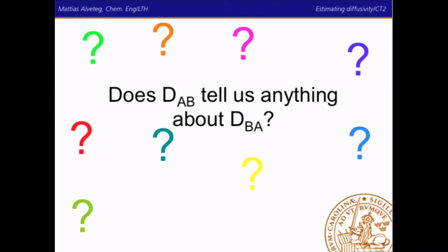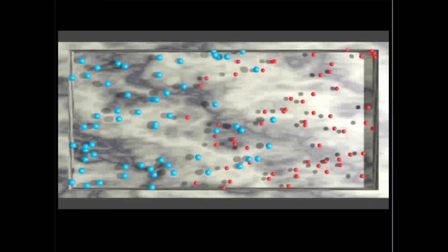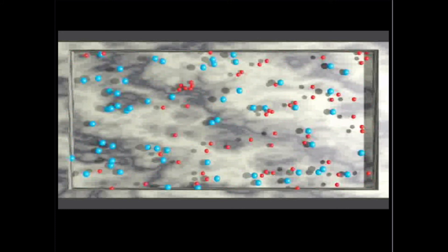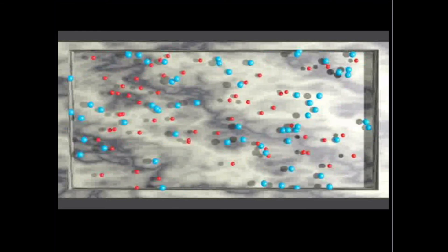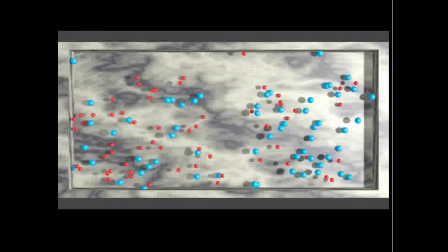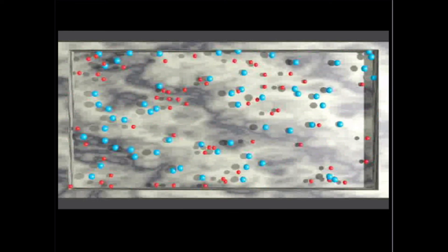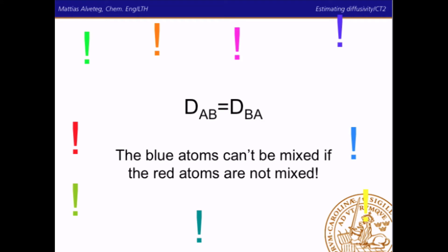What we will talk about, however, is the diffusivity of A in B versus diffusivity of B in A. Does DAB tell us anything about DBA? Well, in this course, we will only deal with binary systems. And while you try to figure out the answer to this question, look at this illustration once again. You see the blue molecules. You see the red molecules. The blue molecules spread into the red area, and the red one spread into the blue area. Does the diffusivity of the blue molecules into the red molecules tell us anything about the red molecules into the blue molecules? Yes, it does. Simply that they must be exactly the same. The blue atoms can't be mixed if the red atoms are not mixed.